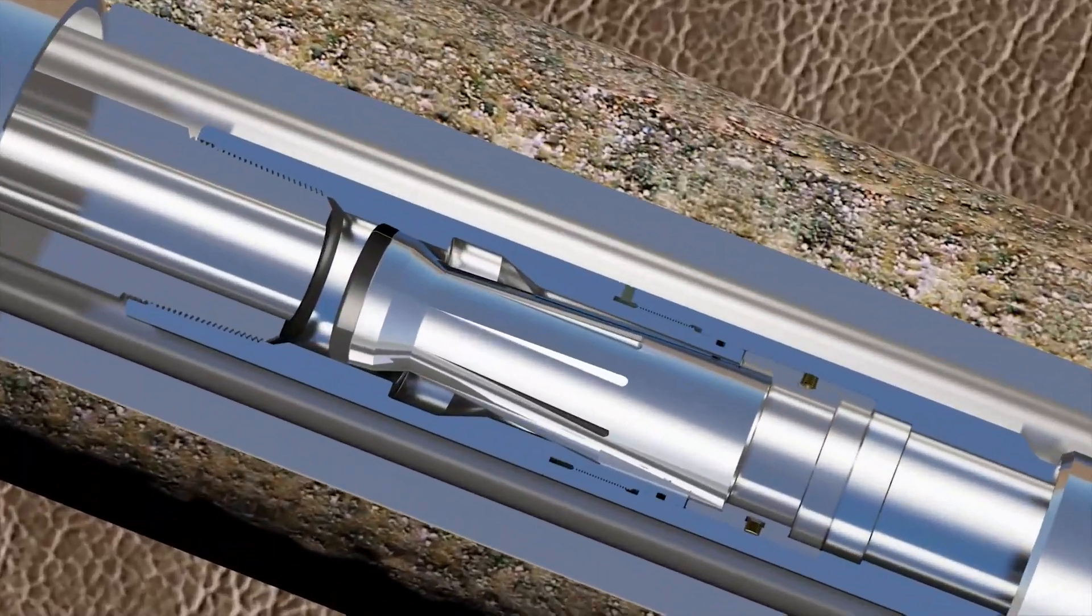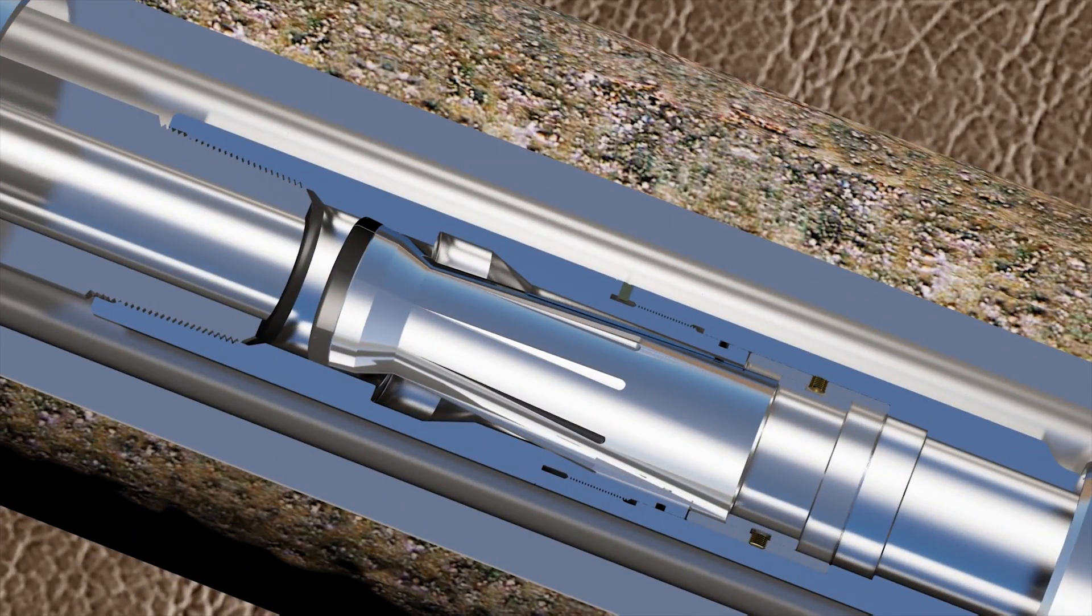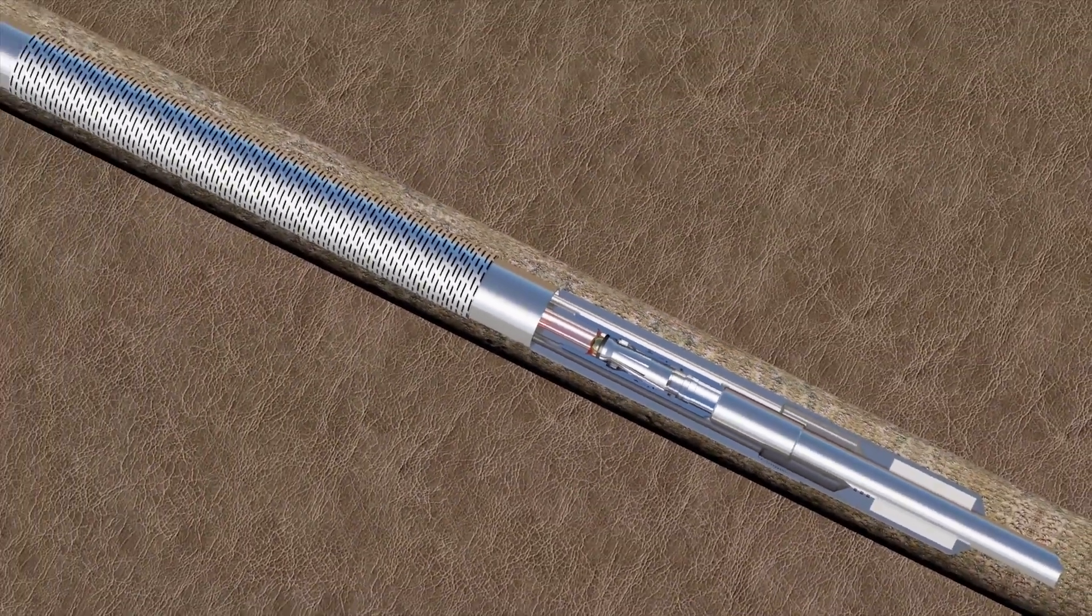Drop the setting ball from surface and wait till it reaches the ball seat in hydro trip pressure sub at bottom. Once the ball has been seated, pressure is being applied to set the liner hanger using a uniquely designed pusher tool.